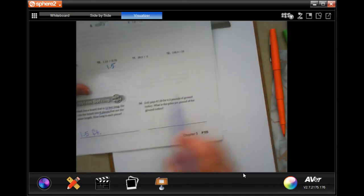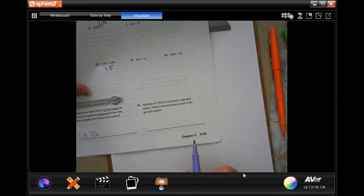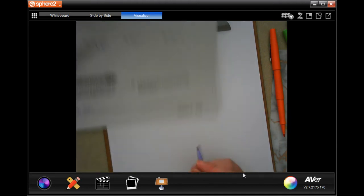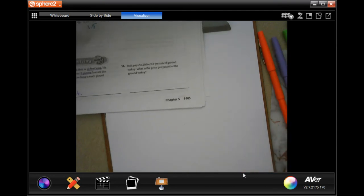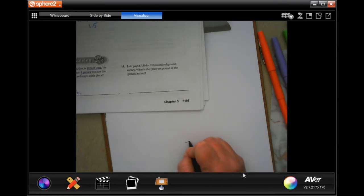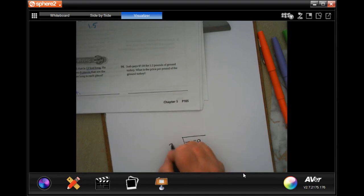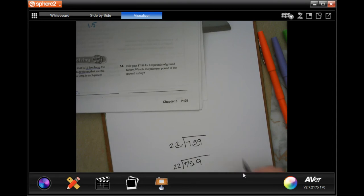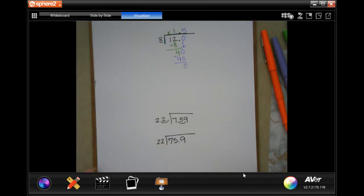Josh pays $7.59 for 2.2 pounds of ground turkey. What is the price per pound? We're going to take that $7.59. We're going to divide it by 2.2. The kicker is that we have to move that decimal. So now we are actually going to have 22 into 75.9. I'm going to cross that one out just so we don't get confused.